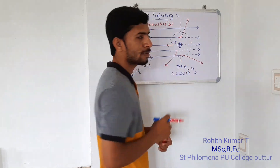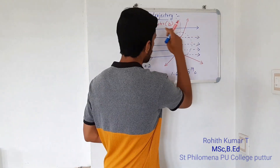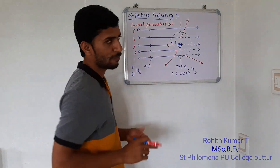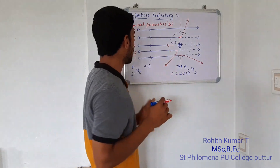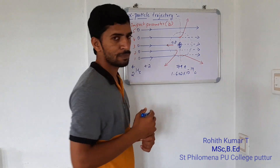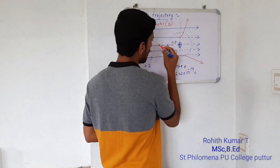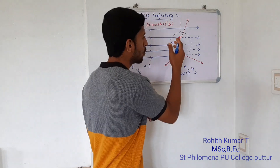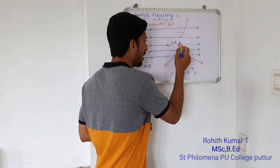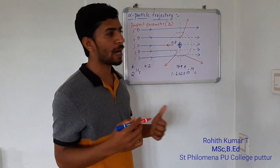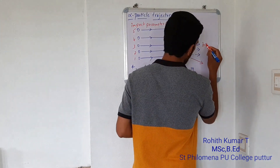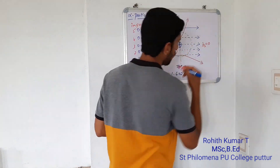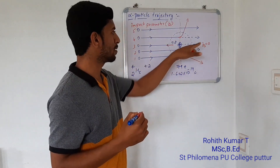This is the center of the nucleus. These are the initial velocity vectors of the respective alpha particles, named 1 through 5. To find the impact parameter for particle 3: its initial velocity vector passes through the center of the nucleus, so there is no separation between the center and the initial velocity vector of particle 3. Therefore, the impact parameter for particle 3 is zero.